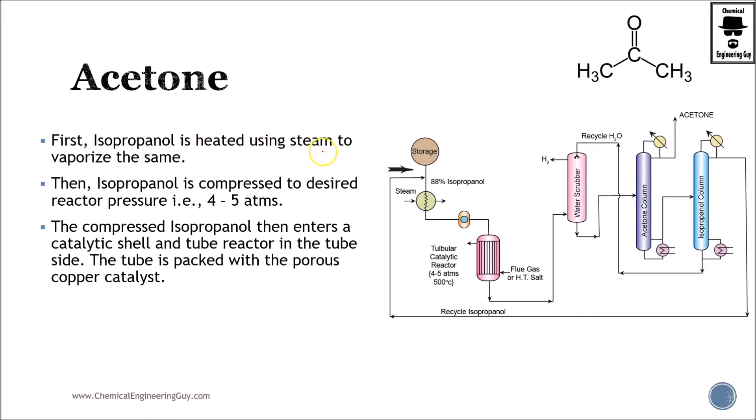Isopropanol is heated using steam to vaporize it. We are going to mix it with our recycle isopropanol. IP recycle plus pure fresh isopropanol is going to get preheated and then compressed from four to five atmosphere. Now that we have the temperature and pressures required, we can start the inlet in the reactor.